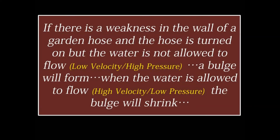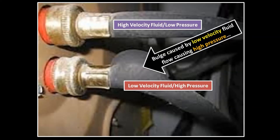The next slide gives a nice visual: in one hose the water is flowing quite dramatically and the hose looks fine. In the other hose, the water is not flowing and you get a bulge. On top, high velocity fluid produces low pressure; on the bottom, low velocity fluid produces high pressure, causing that bulge.